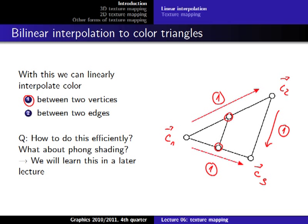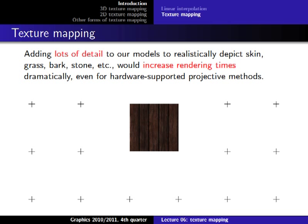We interpolate between c2 and c3 as well — the direction doesn't matter, it gives the same result. That way we can color the edges of the triangle. To color the interior, while walking along the edges and placing color, we always get two corresponding values with the same t value and interpolate between them too. This gives us a fully colored triangle with a smooth transition of color values.